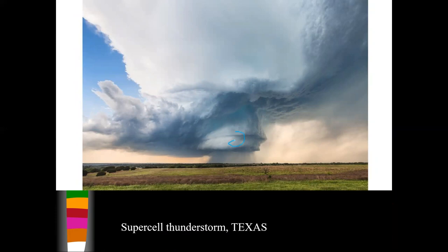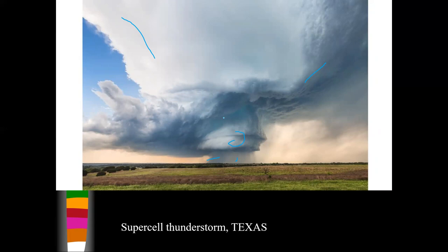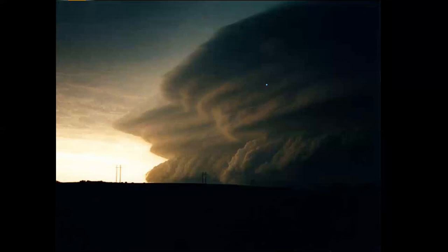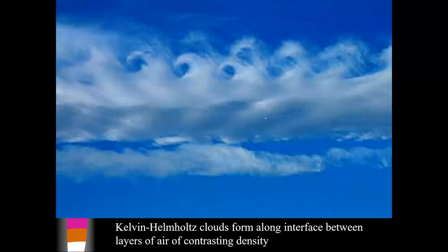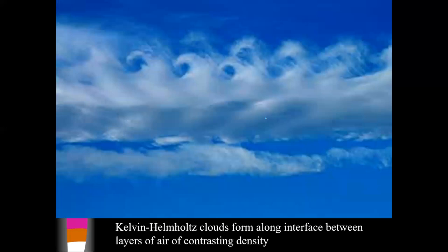This is a supercell thunderstorm — look at that tight circulation, the growth of this thing, and the rain coming out of it. It's that circulation that can produce a tornado. We'll talk more about lightning in a later chapter. Florida is also number one in lightning strikes and lightning deaths. Kelvin-Helmholtz clouds form as a result of air moving in different directions or at different speeds — they look like waves breaking on an ocean, usually higher up in the sky.